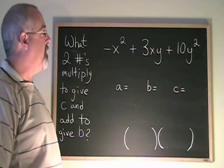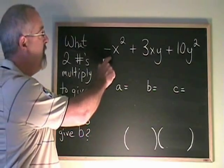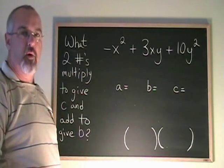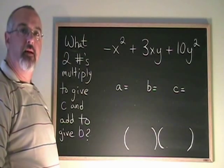Here's another example where the numerical coefficient of a is not 1, it's negative 1. Can I still do the simple trinomial method with this example?